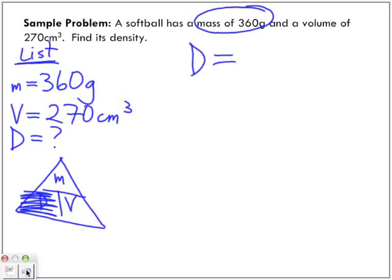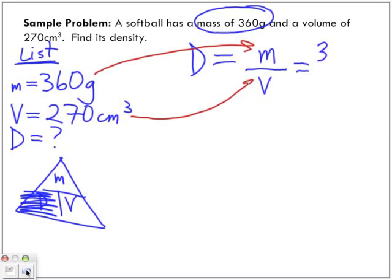D is equal to M is on top of V. So I have M over V. Now I just go about substituting these numbers into my equation. So there's my mass. Here's my volume. So instead of writing M and V, I'm writing the actual M, which is 360 grams. My V is 270 centimeters cubed.